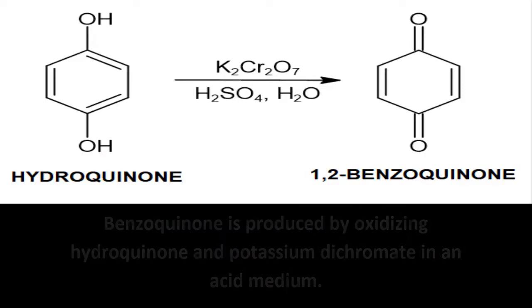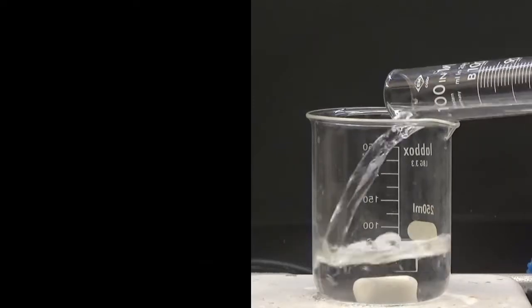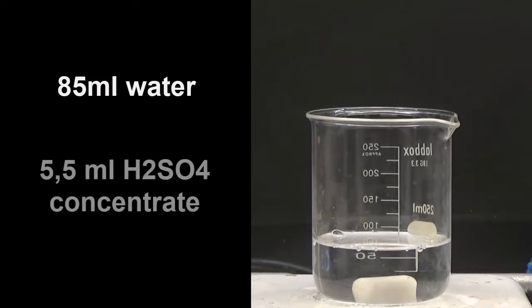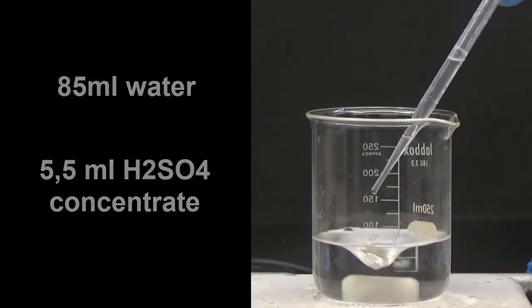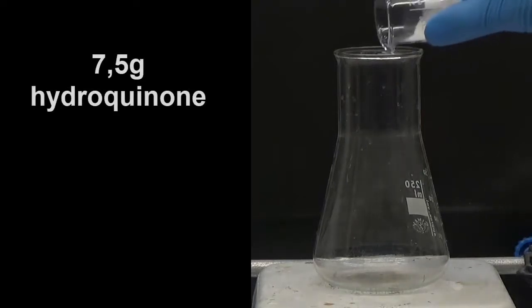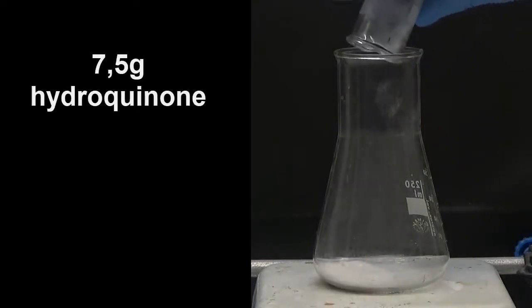To get benzoquinone, we prepare diluted sulfuric acid by dissolving 5.5 milliliters of concentrated acid into 85 milliliters of water. In a 250 milliliter Erlenmeyer flask, we place 7.5 grams hydroquinone and dilute with the sulfuric acid.